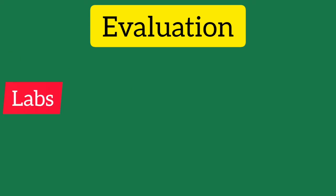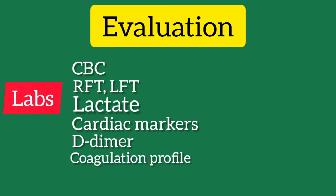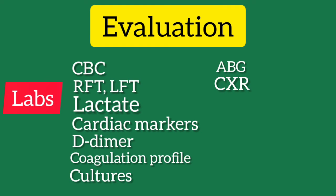Laboratory tests in a patient with undifferentiated shock should include a CBC with differential, renal and liver function tests, serum lactate level, cardiac biomarkers, D-dimer level, coagulation profile, type and screen for possible blood transfusion if hemorrhagic shock is a concern, blood and urine cultures, and blood gas analysis. Initial imaging should include chest X-rays to look for the source of infection such as pneumonia, complications of shock such as ARDS, pulmonary edema in cardiogenic shock, or widened mediastinum in aortic dissection.